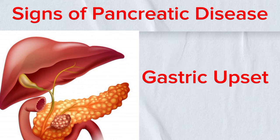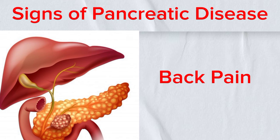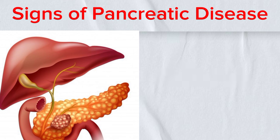Eleventh, gastric upset: digestive disturbances such as bloating, gas, and indigestion may occur due to pancreatic diseases interfering with digestion. Twelfth, back pain: chronic or severe back pain, particularly in the upper back, may indicate pancreatic diseases affecting nearby nerves or tissues. These signs can vary in severity and may not always indicate pancreatic disease, but if experienced persistently or in combination, they warrant medical evaluation.